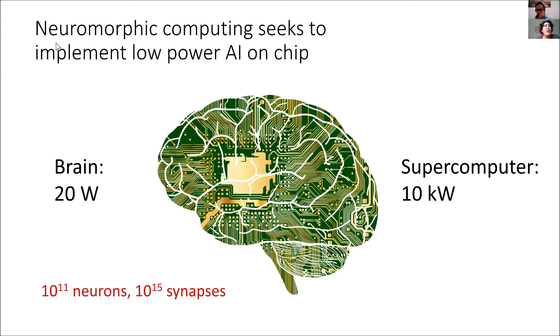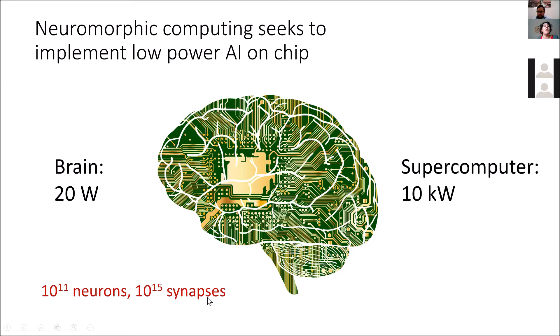The first challenge is the number. In the brain, you have 10 to the 11 neurons and 10 to the 15 synapses. This shows that the neural network has heavily parametrized models, where synapses are parameters and neurons are doing the computation. So if we want to build powerful chips, we need to put a lot of these devices — artificial neurons and artificial synapses — inside. This means that we need nanodevices that reproduce essential features of neurons and synapses for neuromorphic components.